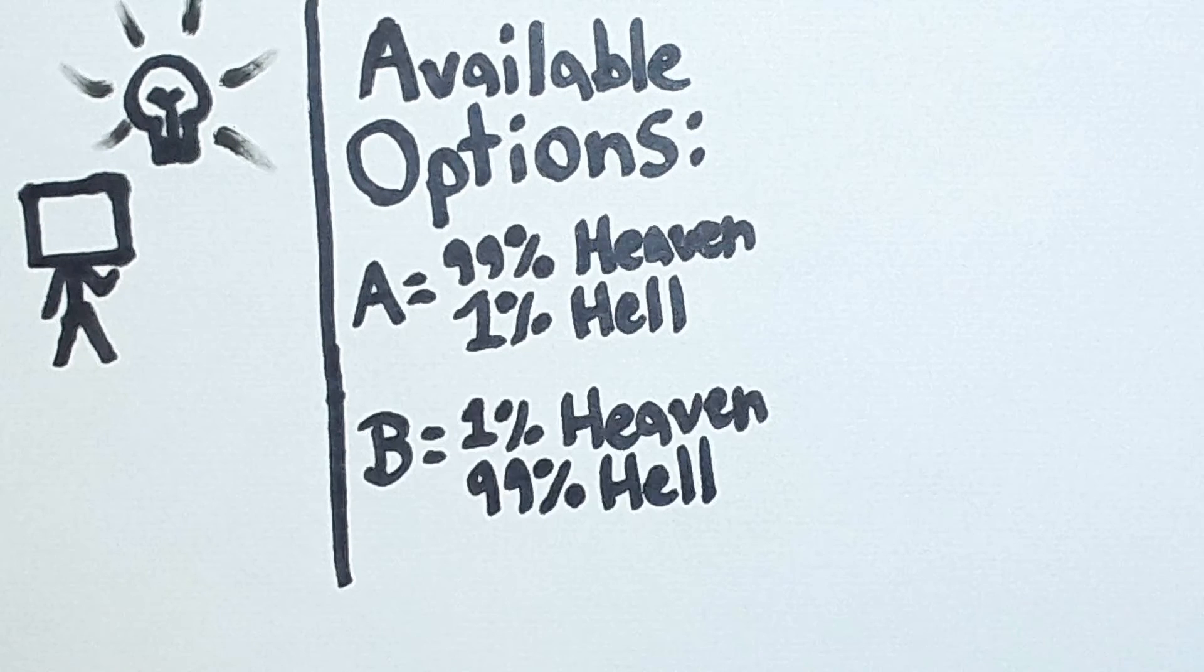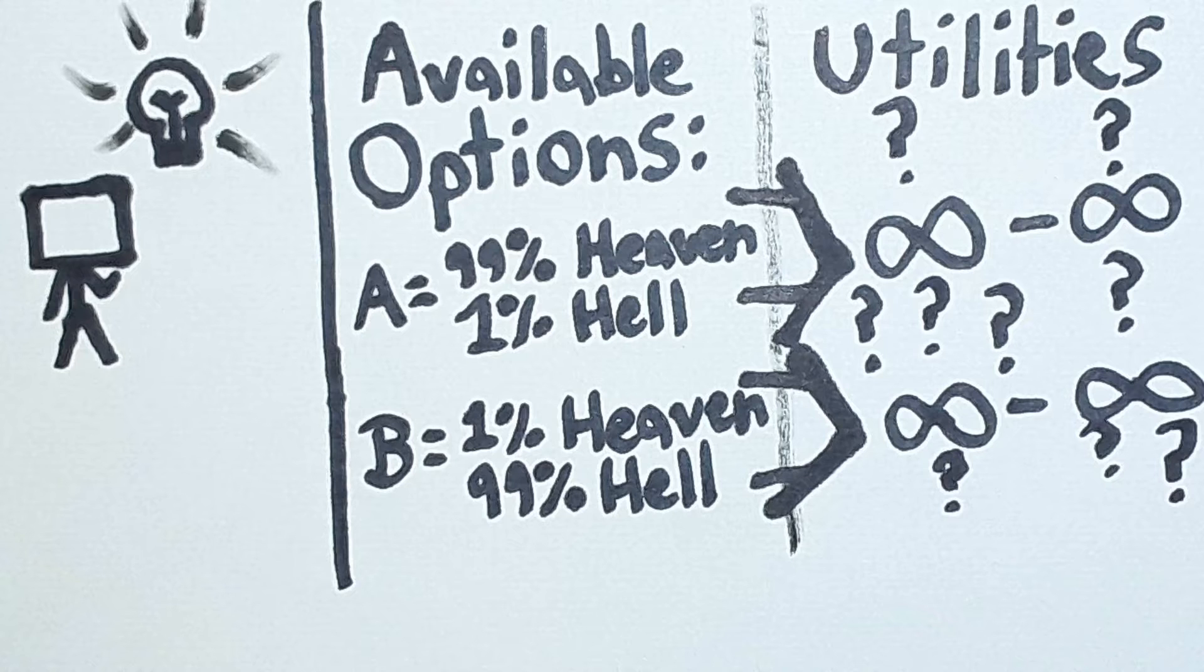So I thought about this a lot, and I finally realized what the problem is. You see, what we've been doing is taking the available options and calculating what the utility would be of those options. So we go from available options to the utility it would give us.